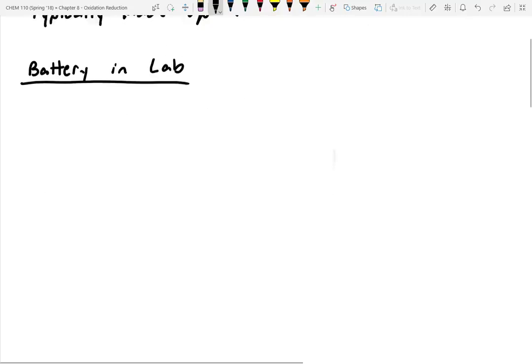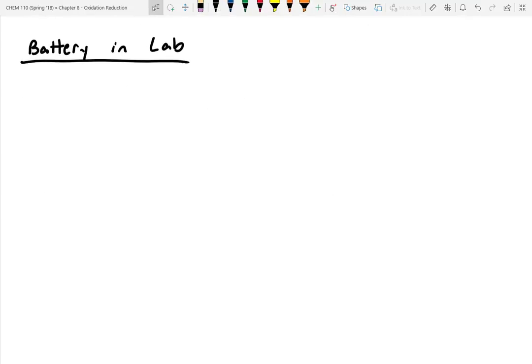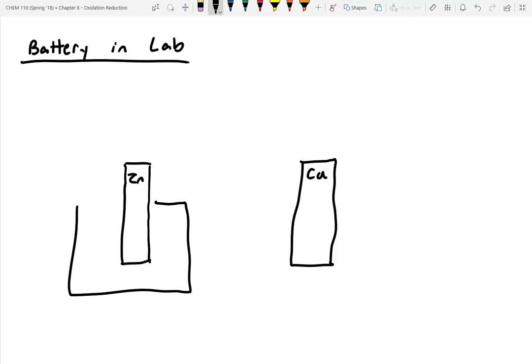All right, in lab we had two different metals. What were the two metal types that we had? Copper and zinc. So I'll put zinc on this side, this was my zinc strip, and then over here I'll put my copper strip, and we put each of these in their own separate beaker. Got our copper and zinc in there. And we filled each of these beakers with an electrolyte solution, right?